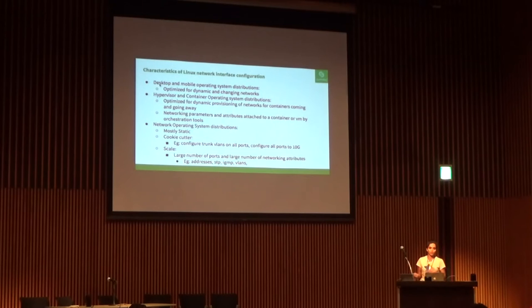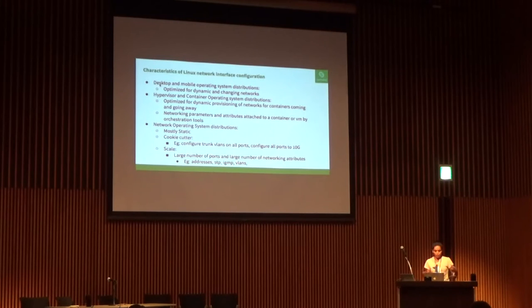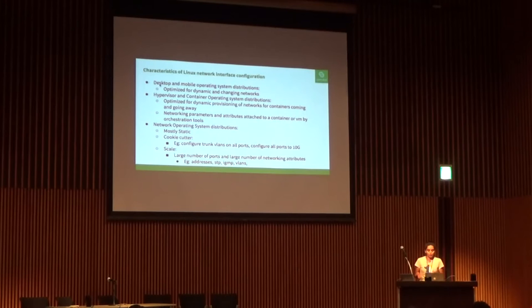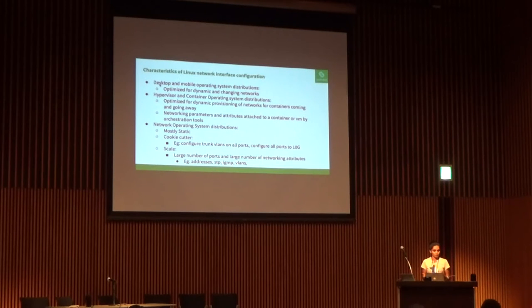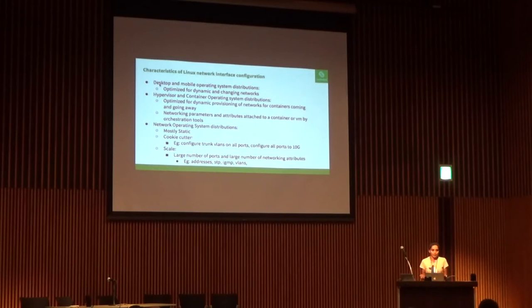Hypervisors and container operating systems have orchestration tools, and a container or VM typically has fixed network interface attributes tied in with the provisioning tool. When we moved to an existing server distribution on a router, we had to figure out massive network interface configuration. We leveraged most of the existing Linux networking components — Quagga, LLDP — improved them, and tested them heavily in production data center environments. For network operating systems, configuration is mostly static, mostly cookie-cutter: creating a hundred VLANs on an interface, configuring port speeds at scale.